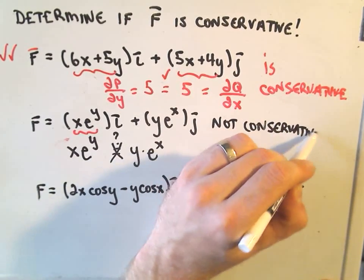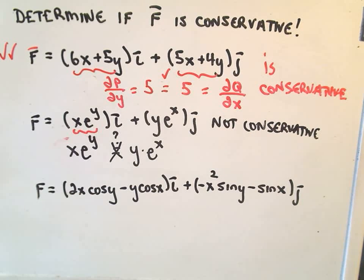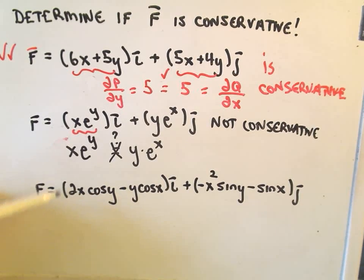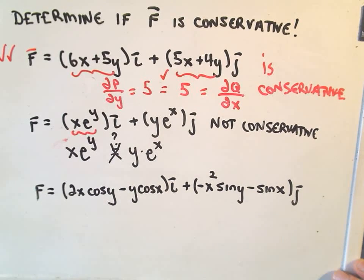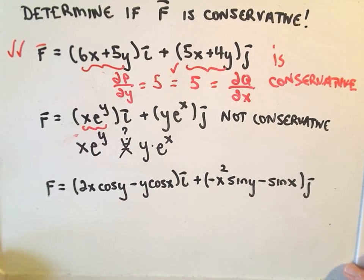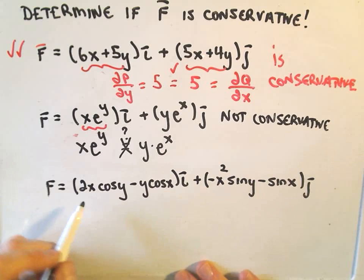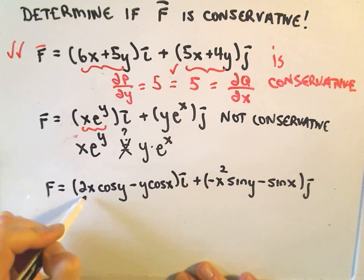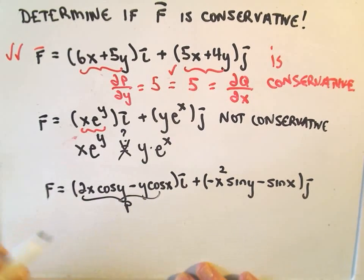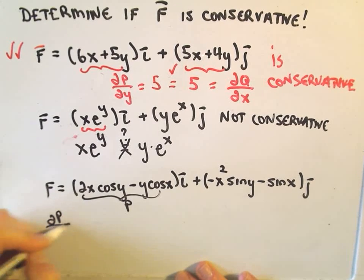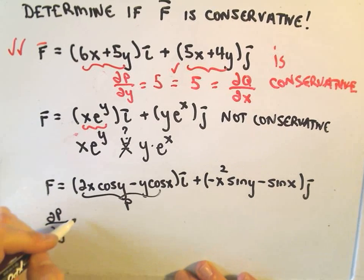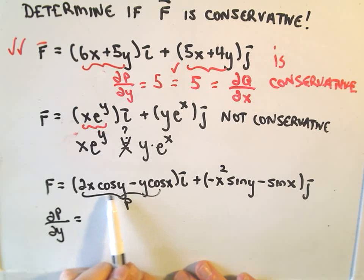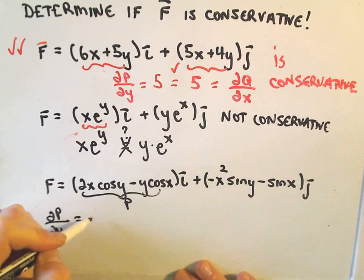Pretty easy to show whether or not a vector field on R² is conservative or not just by using this test. The only thing that's going to be tedious is just finding the partial derivatives in general. So, last but not least, if we take the partial of P with respect to Y, it says the partial of P with respect to Y. If we take the derivative of cosine Y, that's going to give us negative sine Y. So we'll get minus 2X sine Y.